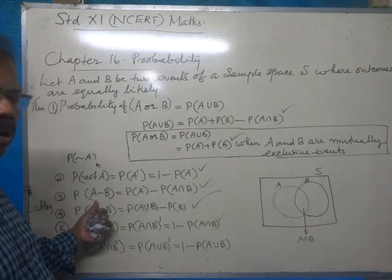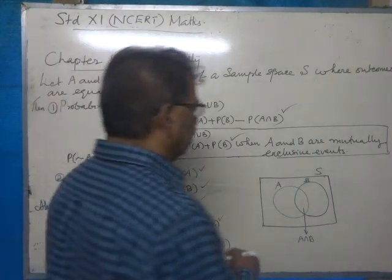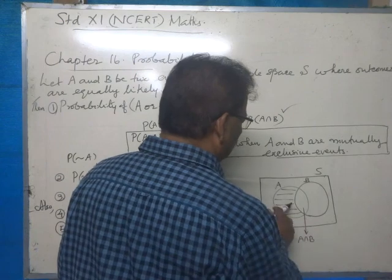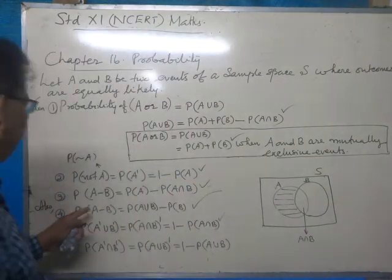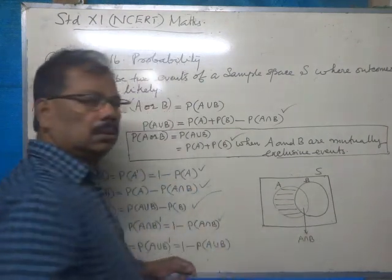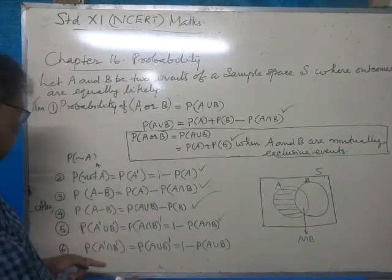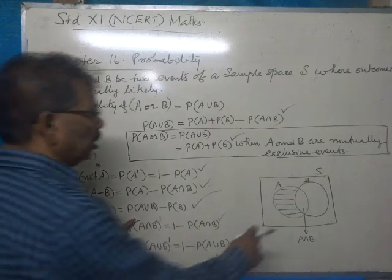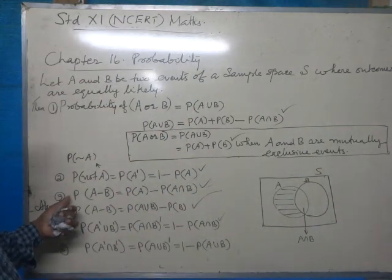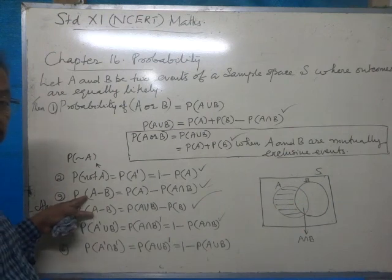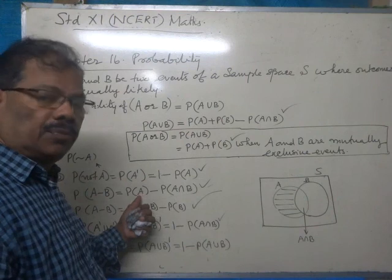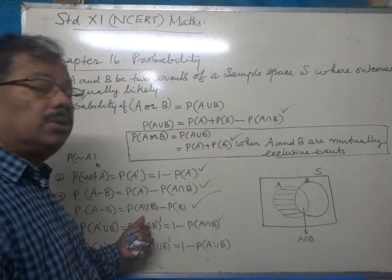Then, probability of A minus B: if we consider the shared portion, it will be A minus B. Probability of A minus B is equal to probability of A minus probability of A intersection B — that is, probability of total A minus probability of A intersection B. It can also be equal to probability of A union B minus probability of B. So P(A-B) can be found by subtracting P(A∩B) from P(A), or by subtracting P(B) from P(A∪B).